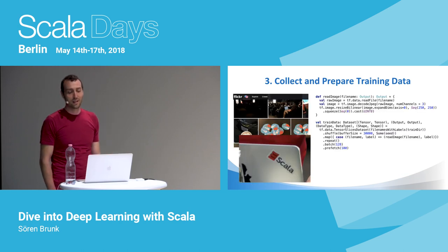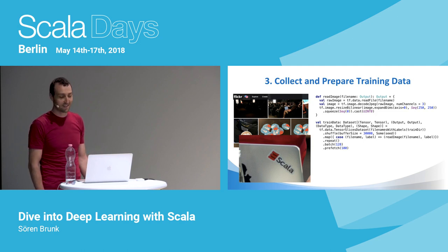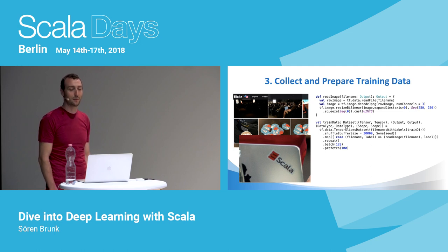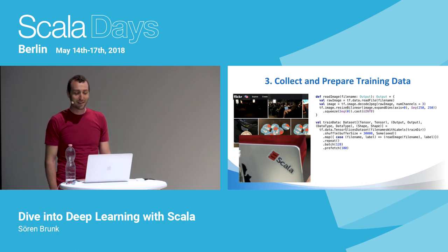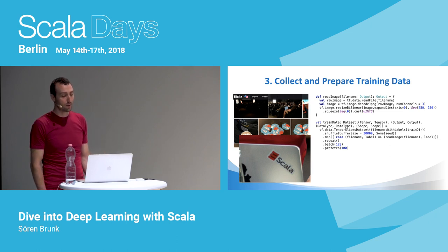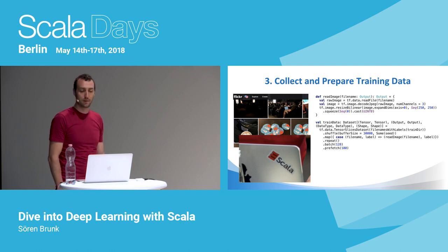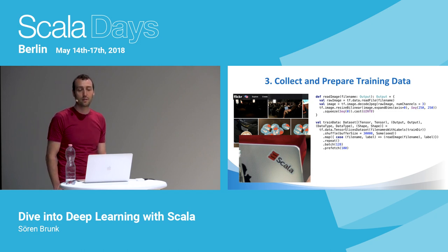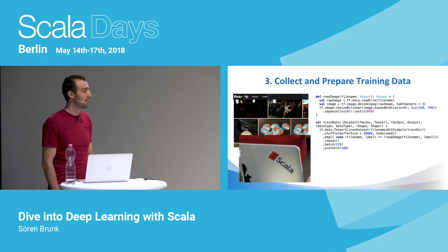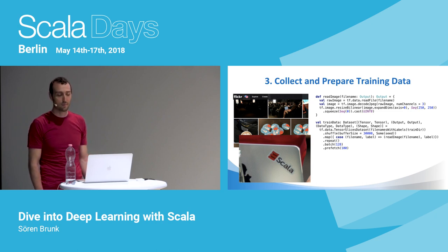A good source for Scala logo photos in the wild is Scala Days — I collected about 800 photos from photo collections of previous Scala Days events and preprocessed them manually. For reading images from disk and doing preprocessing like resizing and adding labels, we can use TensorFlow's dataset API, which allows us to build input pipelines by transforming collections of tensors. It should look very familiar if you know the Scala collections API — it has combinators like map and flatMap. The main difference is we work on tensors, and compared to the Python version, it's type-safe.